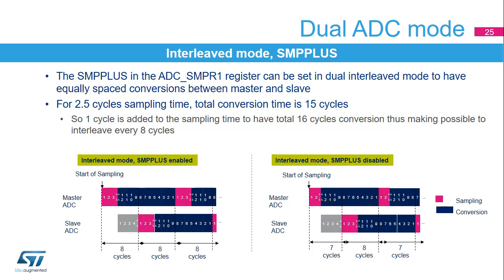When a sampling time of 2.5 ADC clock cycles is selected, the total conversion time becomes 15 cycles in 12-bit mode. If the dual interleaved mode is used, the sampling interval cannot be equal to 2.5 ADC clock cycles since an even number of cycles is required for the sampling time plus conversion time. In the timing diagram on the right, the sampling time on the slave ADC has to be increased to 3.5 clock cycles, while the sampling time for the master ADC is 2.5 clock cycles. The SMP plus bit can be used to change the sampling time from 2.5 ADC clock cycles to 3.5 ADC clock cycles. In this way, the total conversion time becomes 16 clock cycles, thus making it possible to interleave every 8 cycles.